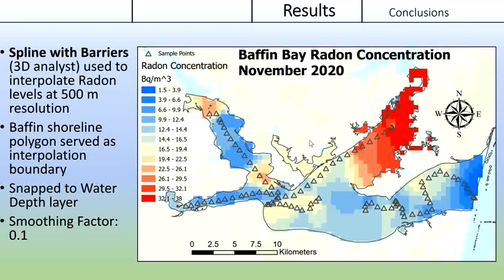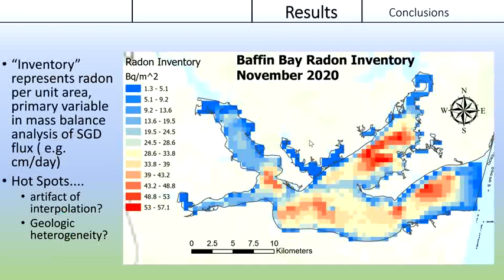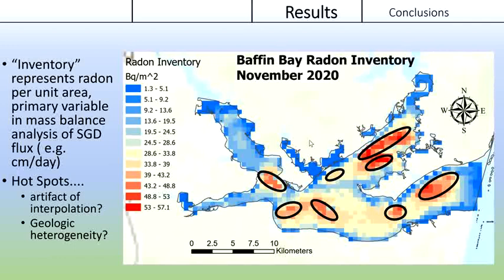But this map isn't really useful to us until it's converted into inventory by multiplying by water depth. Normalizing to water depth produces a very different map than just radon on its own. Areas that may have only had a slight radon signature now stand out as hot spots if they were overlying deeper areas of the bay. This is based on the concept that radon is diluted as it discharges or mixes into deeper water and is concentrated in shallower portions of the bay where there's not as much seawater exchange. These hot spots may be an artifact of the spline interpolation or more likely due to weather variations between sampling events.